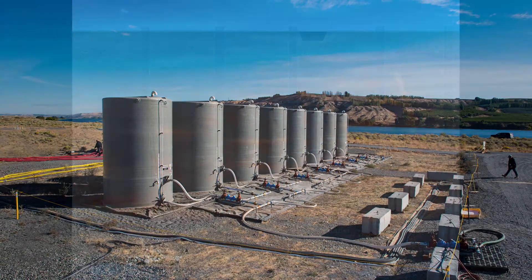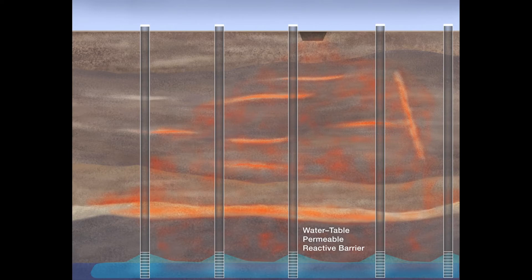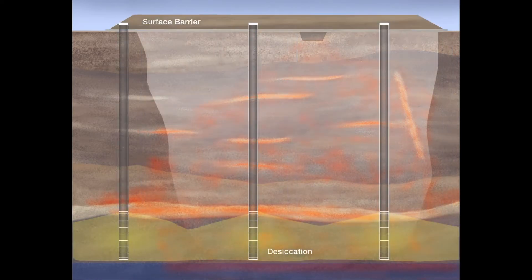Ultimately, these lab and microscopy data feed into fate and transport models developed at PNNL and elsewhere to predict long-term movement with and without potential remediation activities.